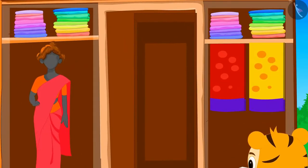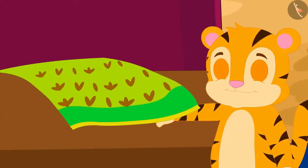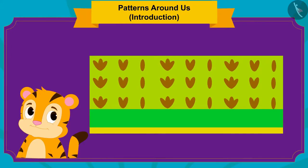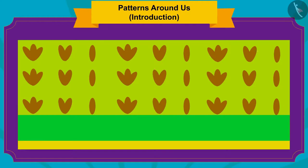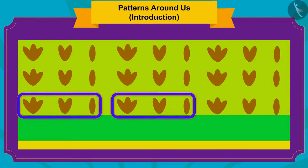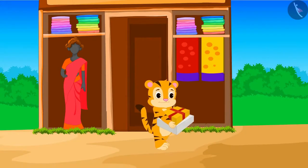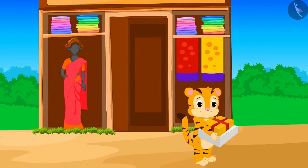Sher Khan bought the cake and has now come to buy a saree for his mother. The saree shop has beautiful sarees of various designs. Sher Khan liked a saree of this design very much and noticed that this saree also has a unique pattern. Children, can you find this pattern? Here, a pattern having three, two and one leaves of the same shape is repeating, thereby forming a pattern. Sher Khan bought the saree and returned home excitedly.